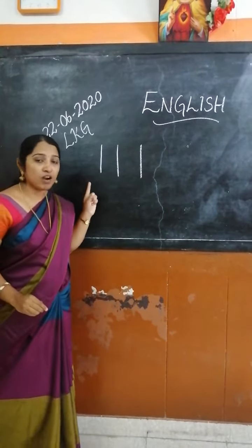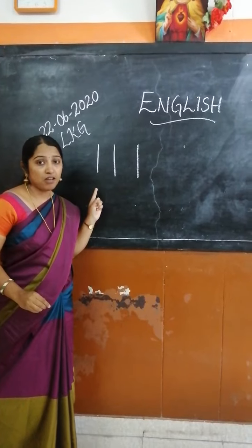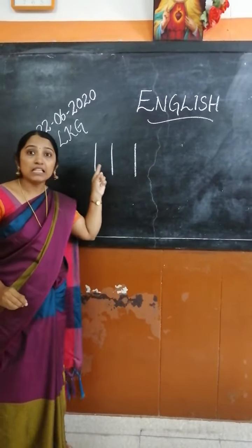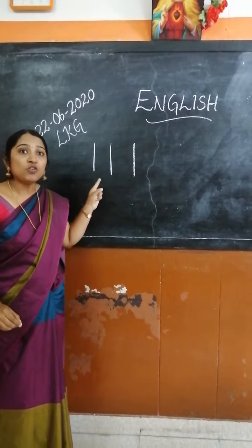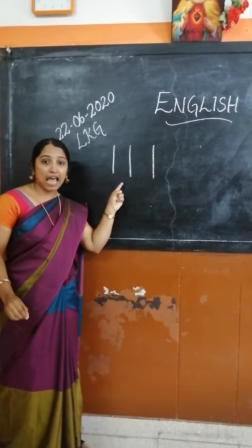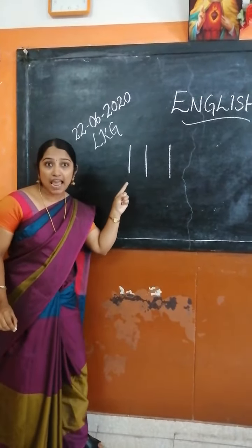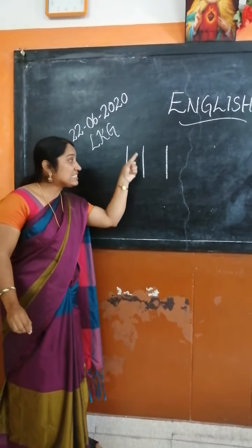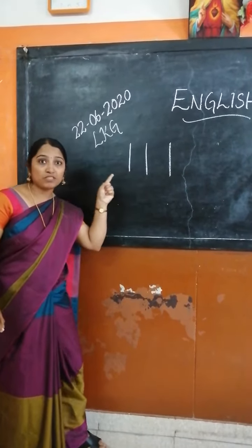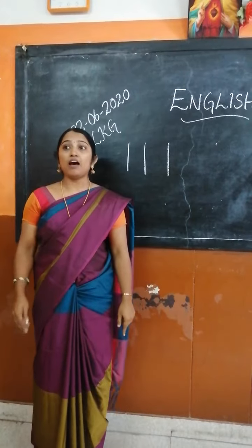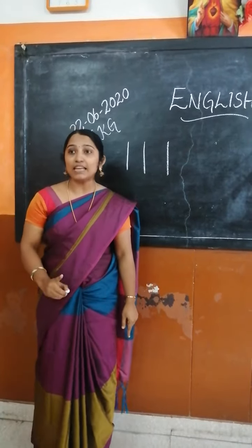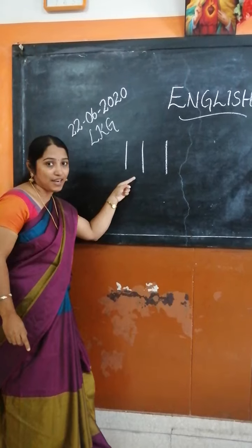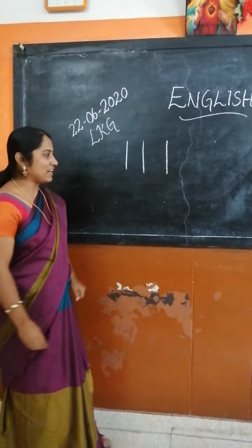Can you tell me what is this? This is a line. The name of this line is standing line. We have to stand like this, so this line is called standing line. Then the next one is...